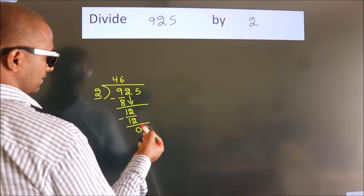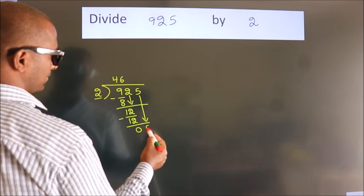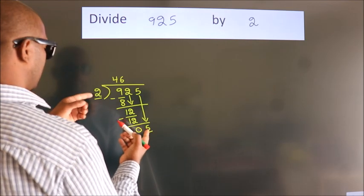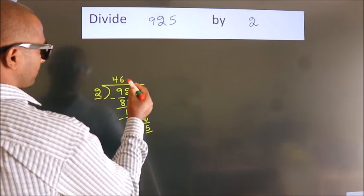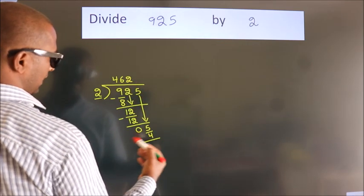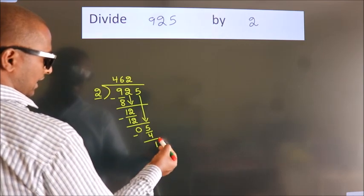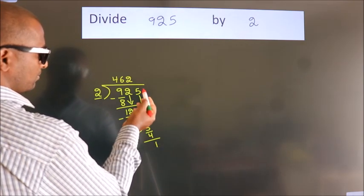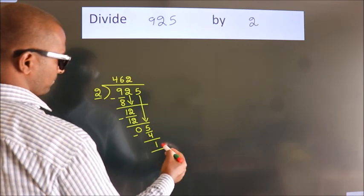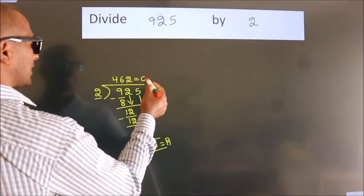After this, bring down the beside number. So, 5 down — so, 5. A number close to 5 in the 2 table is 2 twos, 4. Now we subtract. We get 1. After this, no more numbers to bring down, so we stop here. This is our remainder. This is our quotient.